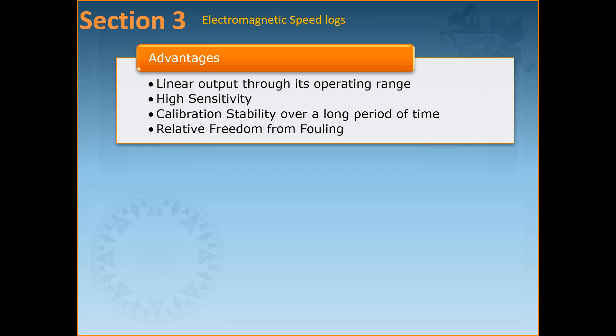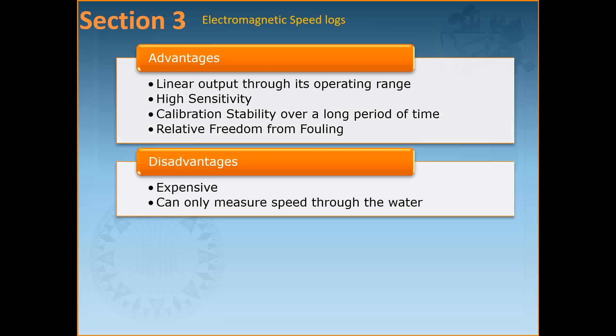The electromagnetic log has several advantages: it has a linear output throughout its operating range from about 0 to 40 knots and is highly sensitive. It has calibration stability maintained over a long period of time, and these logs are relatively free from fouling since modern flush-mounted designs sit very close to the hull. However, the disadvantages are that these logs are expensive and cannot measure speed over the ground — they can only measure speed through water, as their working depends on water flowing past the sensor. Despite this, the electromagnetic log is widely used in naval vessels and increasingly in merchant vessels.